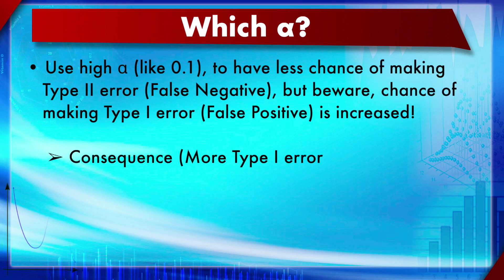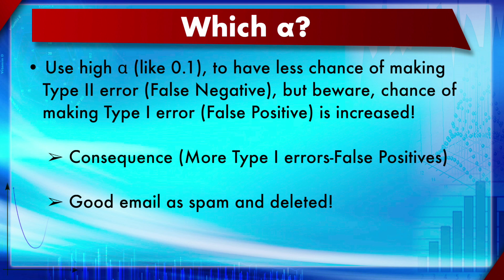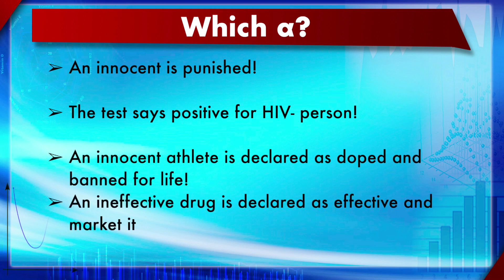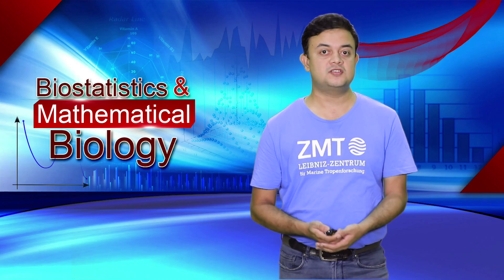You can use a high alpha like 0.1 to have less chance of making a Type 2 (false negative) error, but the chance of making a Type 1 (false positive) error is substantially increased. Examples of false positive consequences include: a good email being deleted as spam, an innocent person being punished, an HIV-negative person testing positive, an innocent athlete being banned for life, or an ineffective drug being marketed.